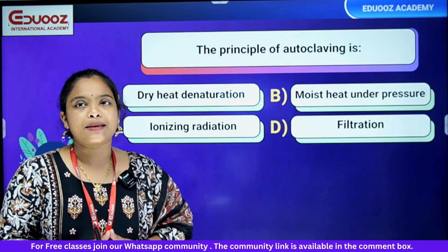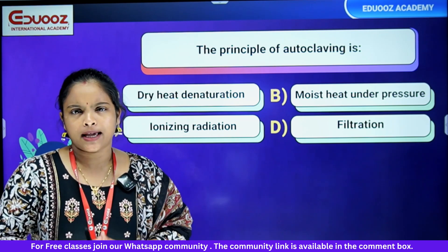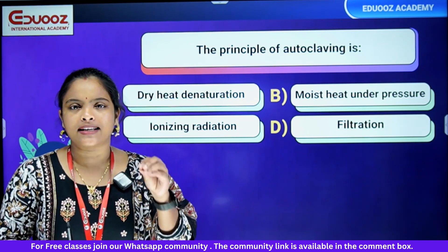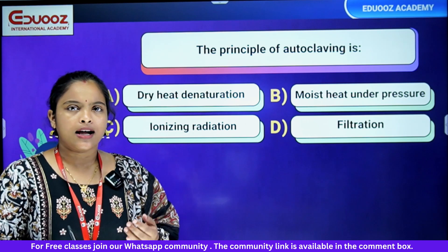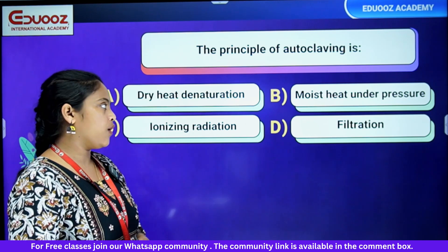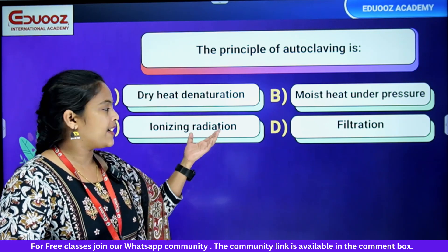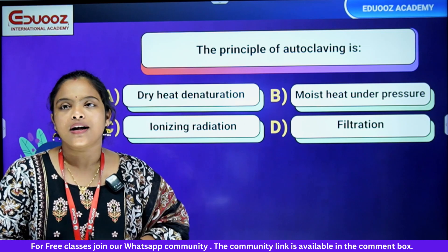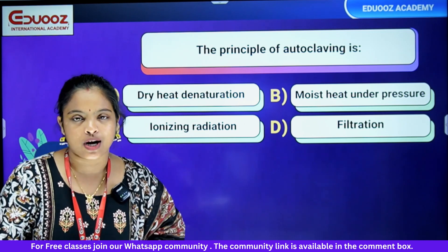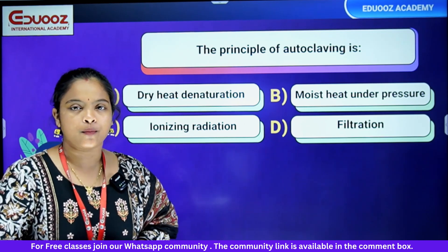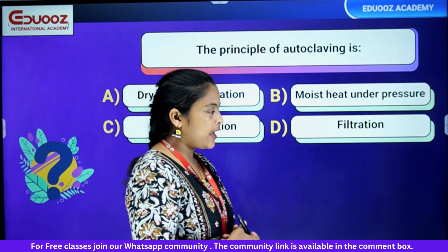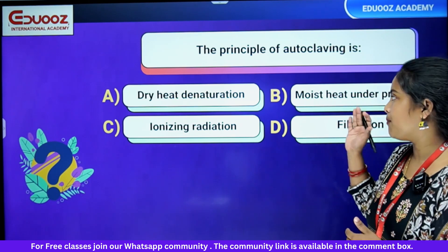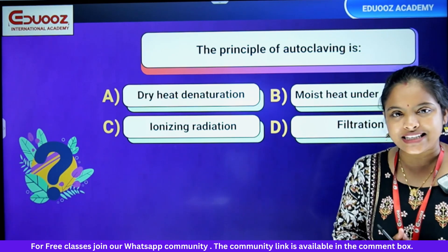The principle of autoclaving: what is its principle? Options are dry heat, ionizing radiation, moist heat under pressure, and filtration. The answer is moist heat under pressure.